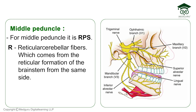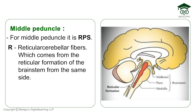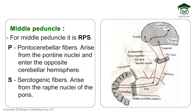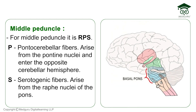For the middle cerebellar peduncle, R-P-S: R stands for reticulocerebellar fibers, coming from the reticular formation of the brainstem on the same side. P is for pontocerebellar fibers, arising from the pontine nuclei and entering the opposite cerebellar hemisphere — forming the corticopontocerebellar pathway, as the cerebral cortex sends fibers to the pontine nuclei which then cross to the opposite cerebellum. S is for serotonergic fibers, which arise from the raphe nuclei of the pons — these are the only fibers here that do not end with 'cerebellar.'